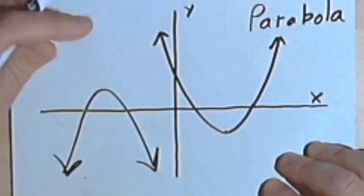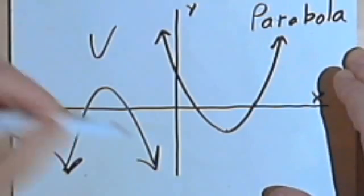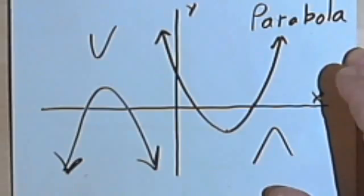It doesn't matter where on the graph it is. It could be up in one of the different quadrants. Something like that would be a quadratic function.